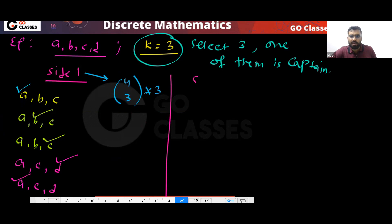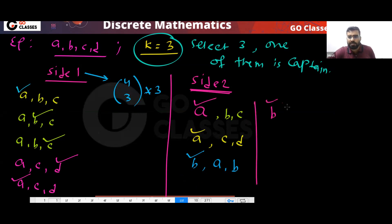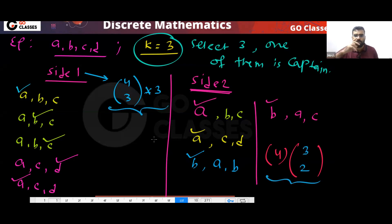Now for side two of the story: first select a captain. For example, I'm selecting a captain first, then selecting the remaining two people. First select a captain — that's four ways — and then from the remaining three people, select two people. These two sides are the same.